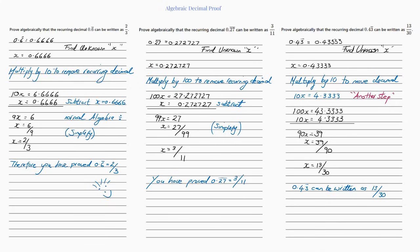The first question says: prove algebraically that the reoccurring decimal 0.6̄ can be written as 2 over 3. So it's telling us the answer is 2 over 3, and we need to work out all the steps so our answer comes out as 2 over 3. I've started with putting 0.6 reoccurring into decimal format — the dot is telling us it's reoccurring — and it comes out as 0.6666 reoccurring, with endless dots.